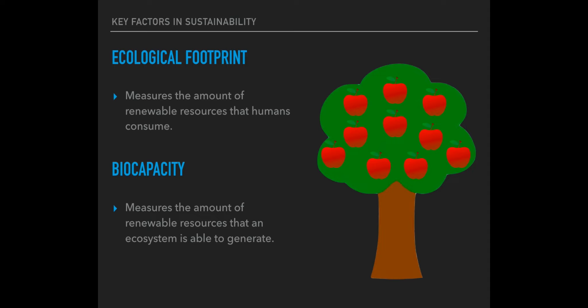There are two main factors that play in sustainability. One is the ecological footprint, and two is the biocapacity. The ecological footprint is the amount of resources that humans consume or take away from the environment. Biocapacity, on the other hand, is the amount of resources that the environment can produce.